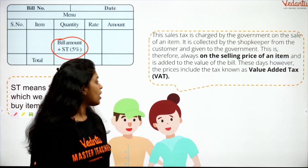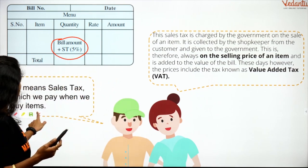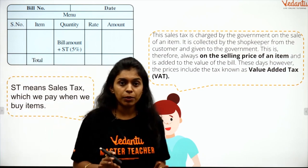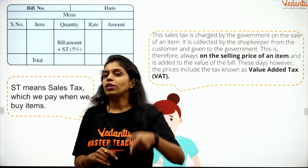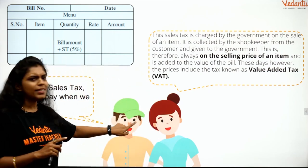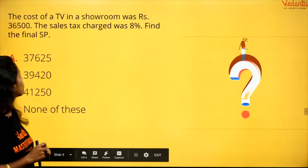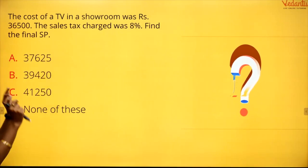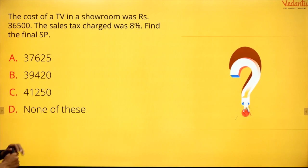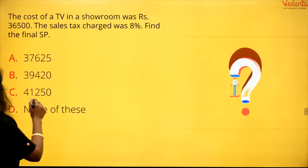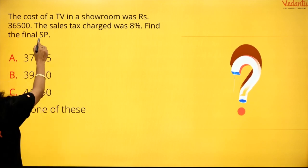Let's get started with the questions. The questions are really simple — you will find them easy because you have already done profit and loss, which is even more complex than these types of questions. The first question: the cost of a TV in a showroom was Rs. 36,500. The sales tax charge was 8%. Find the final SP — selling price.